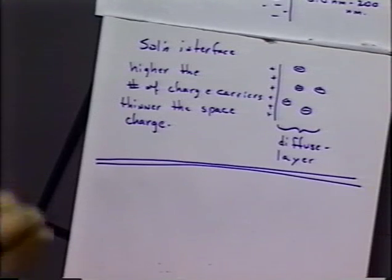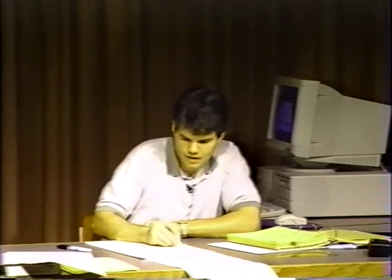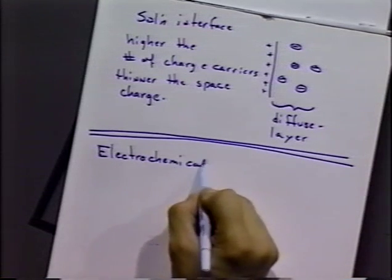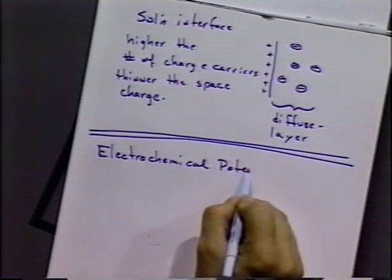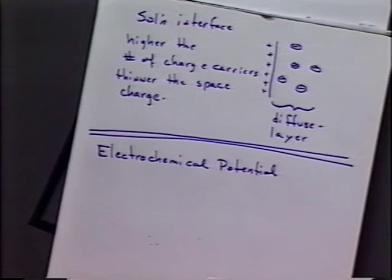I want to change the subject a little bit now. We've talked a little bit about the potentials at interfaces. Let's talk about the potentials that are arising in a slightly different way, in a more thermodynamic way again. And one way we can talk about that is to think about what they call the electrochemical potential.